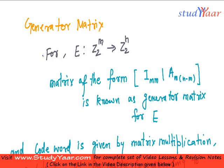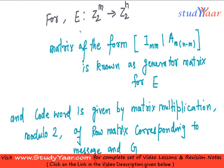Now let us understand what is a generator matrix. So let us suppose I have an encoding function which is like this from Z2 raised to power m to Z2 raised to power n. So I am encoding an m-bit information into an n-bit code.